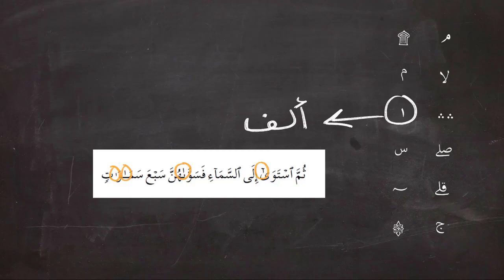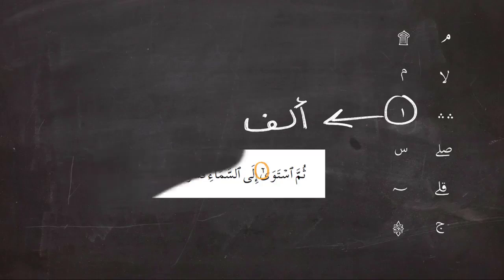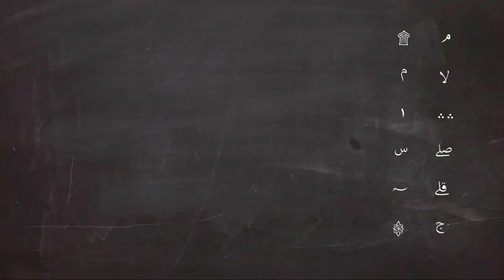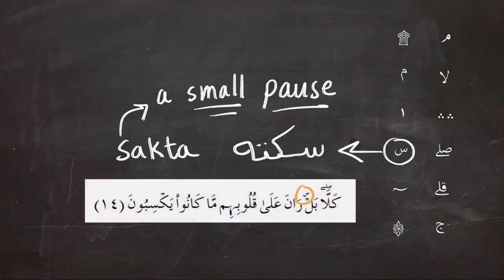Next, the small seen means a small or very little pause. It doesn't mean that you're going to have to stop and take a breath. It means that you're going to stop very momentarily for like half a second and then continue reading. So it is a very short pause.